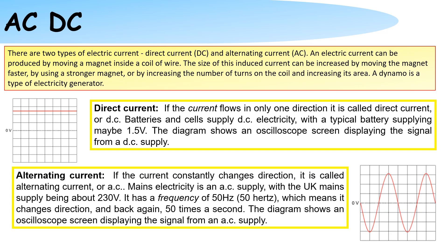If the current constantly changes direction it is called an alternating current. Mains electricity is an alternating current supply with the UK mains supply being at around 230 volts.